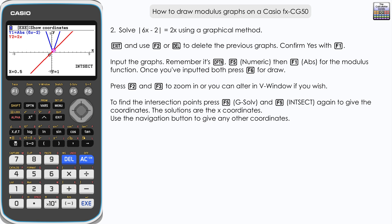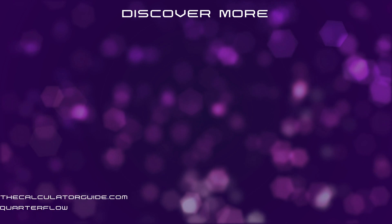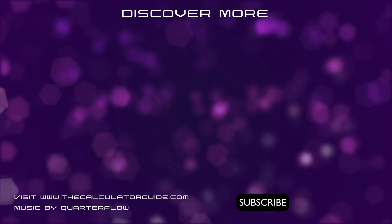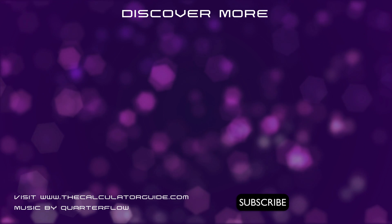So there we go, how you can draw a modulus graph or absolute function graph on the Casio FX CG50 and use it to help solve equations involving the modulus function using the intersection points on the graphs. Don't forget to like and subscribe for future videos. Thank you very much for watching and I shall see you next time on the calculator guide.